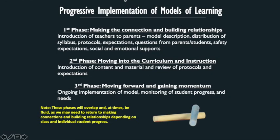We also want to discuss the progressive implementation of the models of learning. The district is recommending three phases to go through the school year. In the first phase, this is probably the most important one. We're hoping that we can build that relationship, as we understand that a positive relationship is integral to success. The first phase is really going to be making contact with our families, making sure that we have lanes of communication that are easy to navigate. We want to understand the dynamics of all our families and our students so that we can better serve their needs.